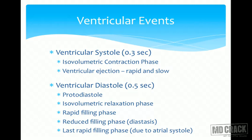The attempted regurgitation of blood causes closure of the AV valves. Now with both the AV valves and semilunar valves closed, the ventricle contracts as a closed cavity — meaning there is no change in volume. The end-diastolic volume of about 120 ml remains constant while pressure rapidly increases. This phase is called isovolumetric contraction phase — 'iso' meaning same volume.